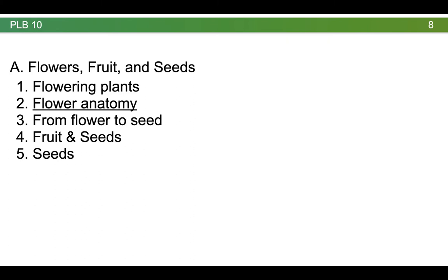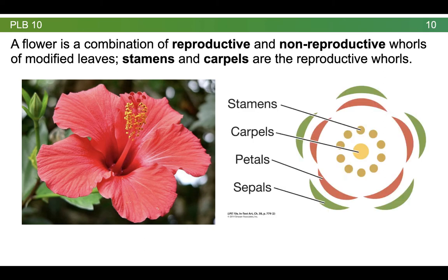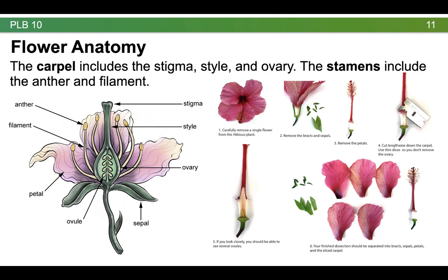One way to gain insight into angiosperms is to have a look at the anatomy of a flower. Recall from our previous conversation that a flower is a combination of both reproductive and non-reproductive whorls. The whorls are modified leaves. So on this hibiscus flower, for example, the petals are really obvious and you can see that they are the product of modified leaves, maybe just with some extra coloring, but the other parts of the flower are actually the product of modified leaves as well. If you take a top-down view, on the outside are the sepals. The sepals tend to be green and photosynthetic. The next whorl are the petals. Petals tend to be colored to attract pollinators. The male part of the flower are the stamens and the female part of the flower is the carpel or carpels. When you look at the carpel more closely, you see that the carpel includes the stigma, the style, and the ovary.